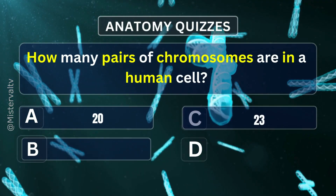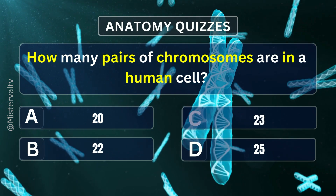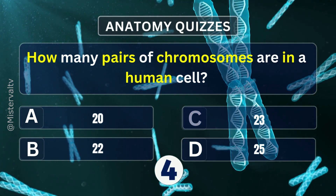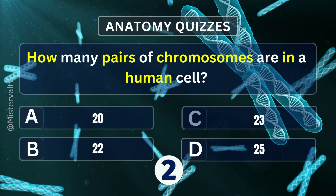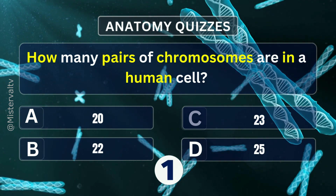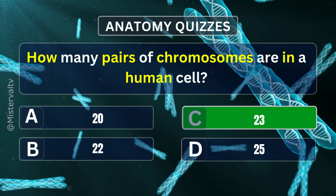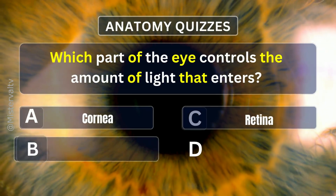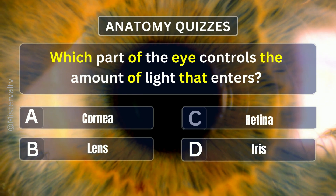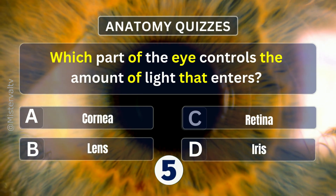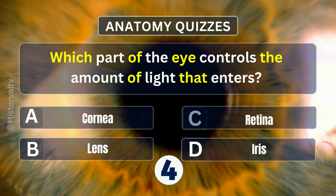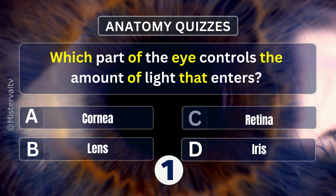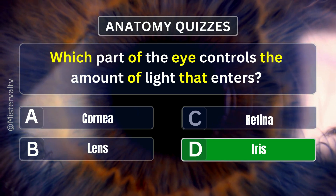How many pairs of chromosomes are in a human cell? Answer. C. 23. Which part of the eye controls the amount of light that enters? Answer. D. Iris.